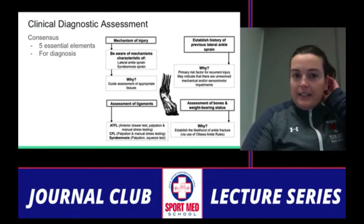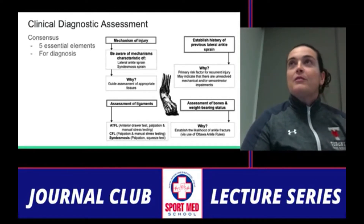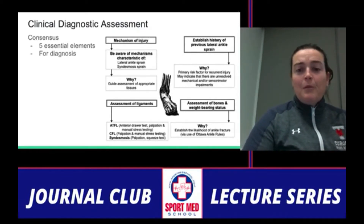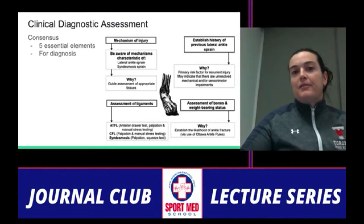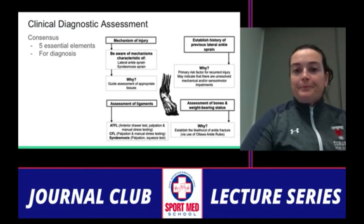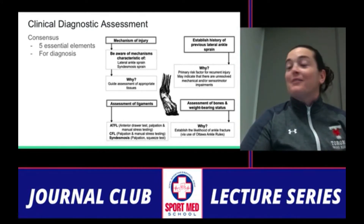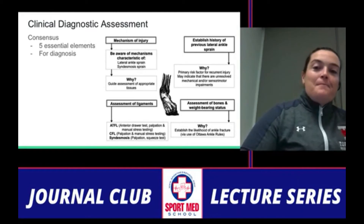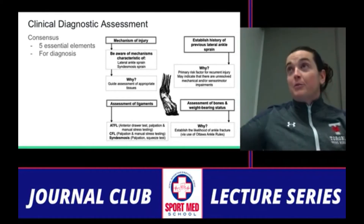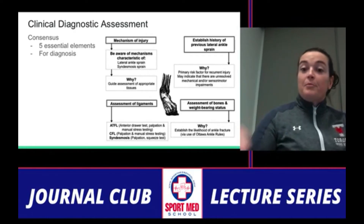For the clinical diagnostic assessment, they identified five essential elements. The first is to determine the mechanism of injury, which is important for ruling out a syndesmotic sprain. They also wanted to know about any previous injuries, which helps identify ongoing sensory, motor, or mechanical impairments down the road — and multiple prior injuries carry even higher risk of recurrence.